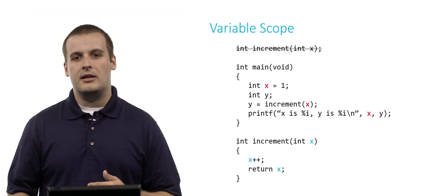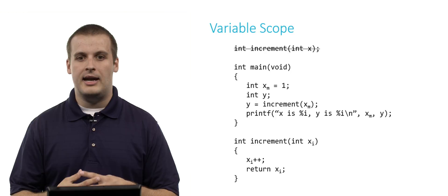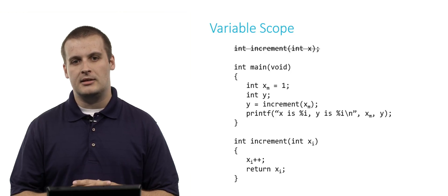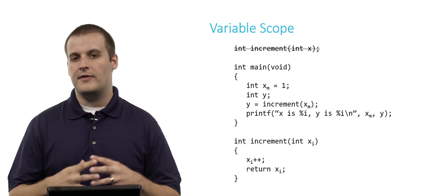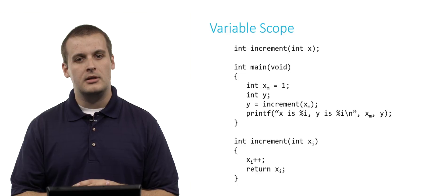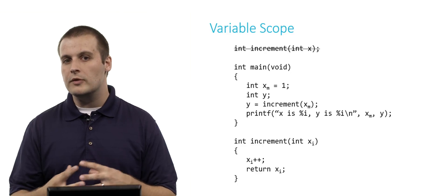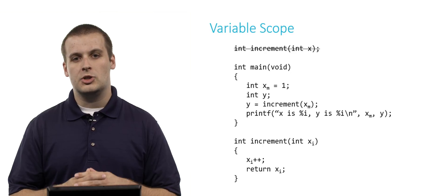If you're mathematically inclined, you might have instead thought of this as x sub m for main and x sub i for increment. But it's the same idea. x sub m or the red x's in the previous slide are the variables that are local, is the instance of x, rather, that is local to main. And x sub i, or the blue variables on the previous slide, are the instances of x that are local to increment.